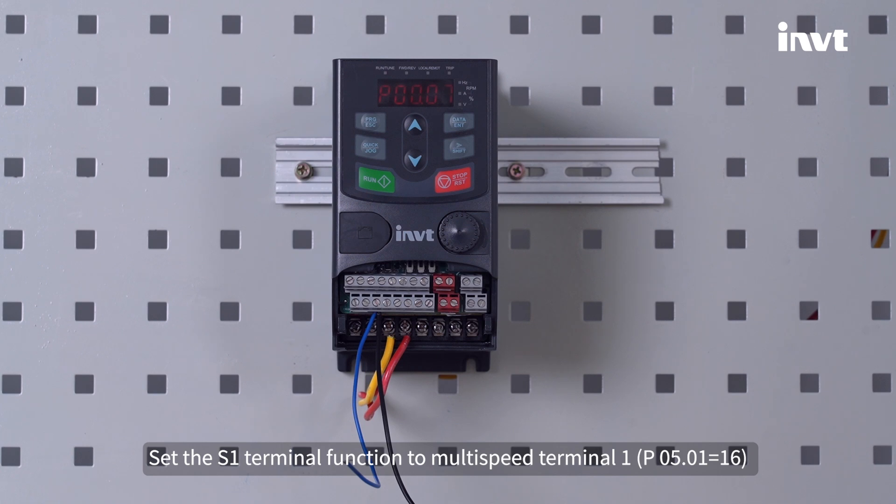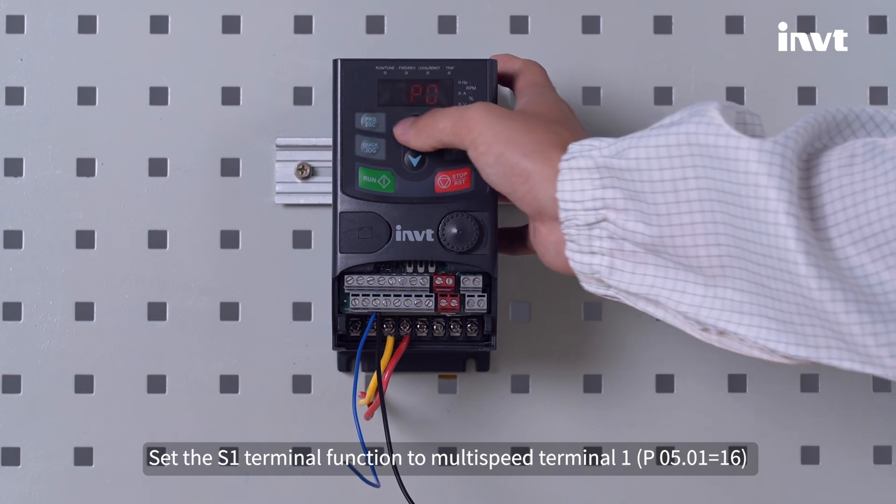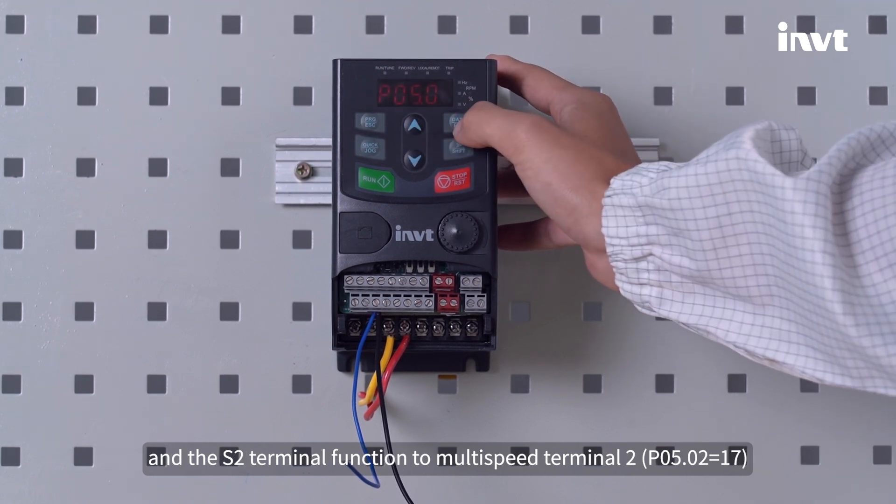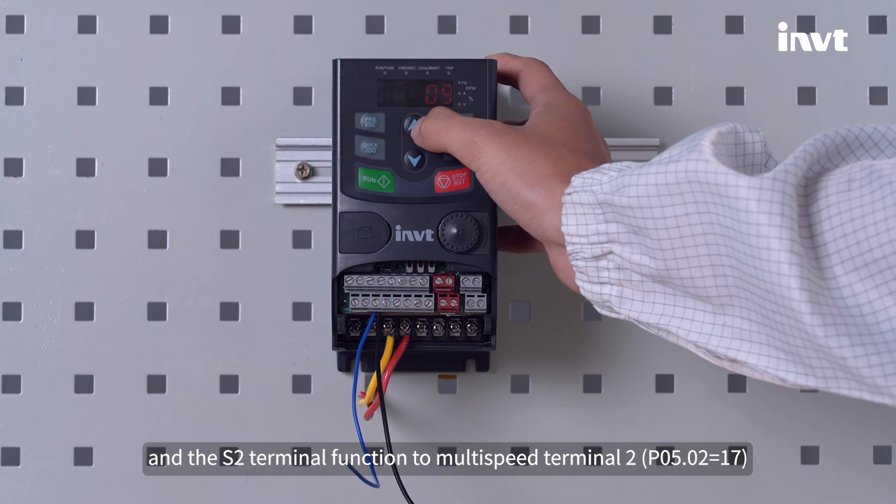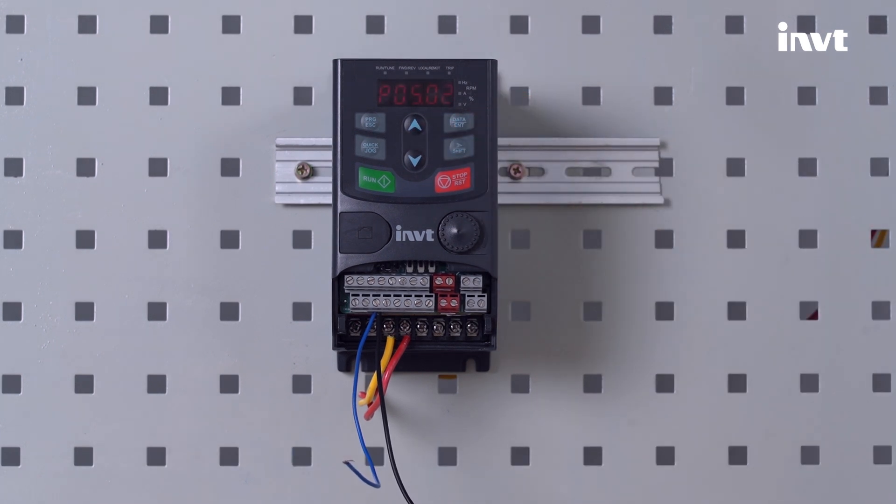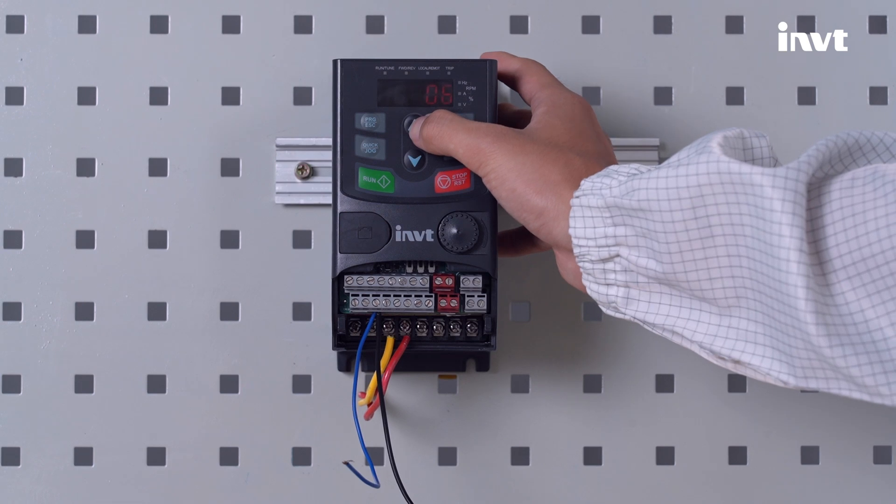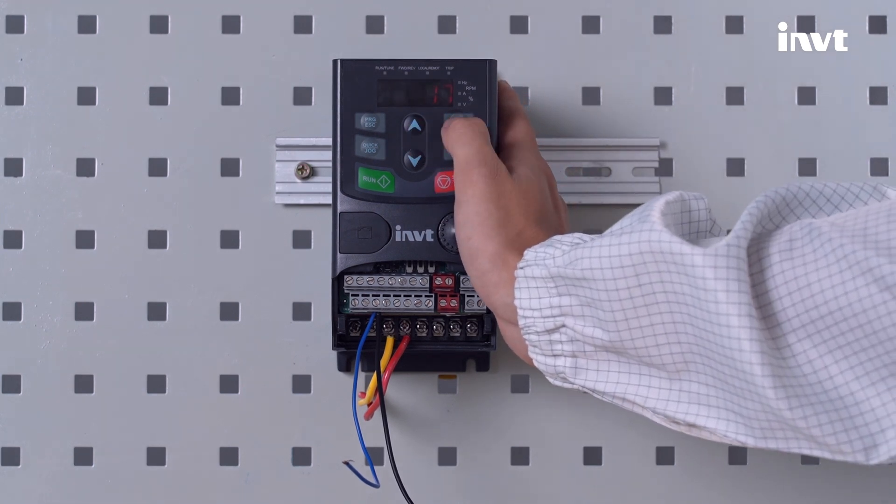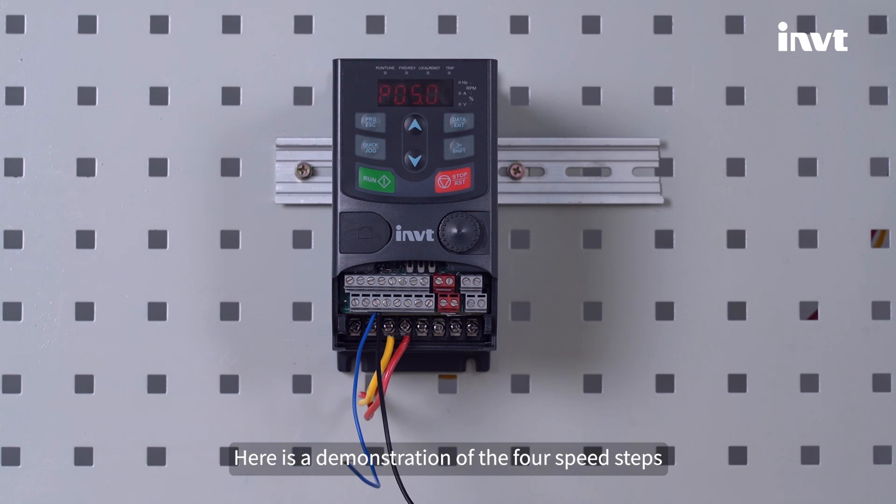Set the S1 terminal function to multi-speed terminal 1, P05.01 equals 16, and the S2 terminal function to multi-speed terminal 2, P05.02 equals 17. Here is a demonstration of the four speed steps.